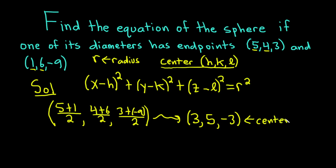Let's double-check: 5 + 1 = 6, divided by 2 is 3. 4 + 6 = 10, divided by 2 is 5. 3 + (-9) = -6, divided by 2 is -3. So we've confirmed our center. Now we just need the radius. Our h is 3, k is 5, and l is -3.